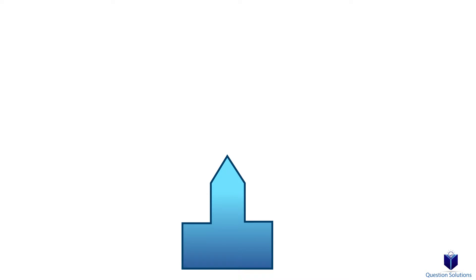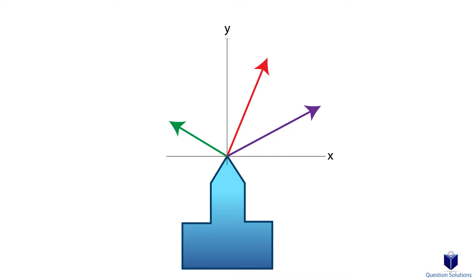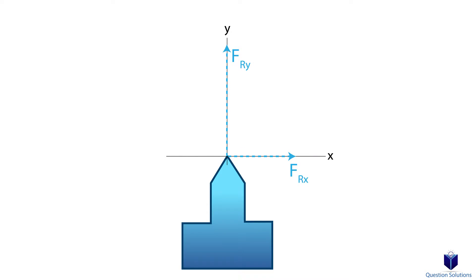In simple terms, let's say we have an object and many different forces are applied to it. We can take all of those forces, break them into components, and then represent all of these forces with just two component forces. These two components will have the same exact effect as all of the other forces. We can go even further by finding the magnitude of the resultant force, showing one single force which accounts for all the others.